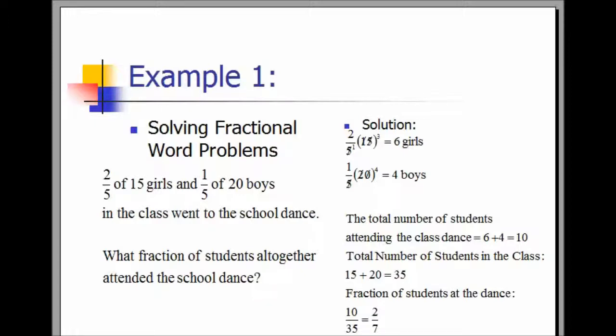The total number of students in the class is 15 plus 20 equals 35. The fraction of students at the dance was 10 over 35. We reduced to lowest terms by dividing numerator and denominator by 5. 10 divided by 5 is 2, and 35 divided by 5 is 7. Our final answer is two-sevenths.